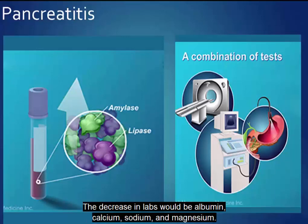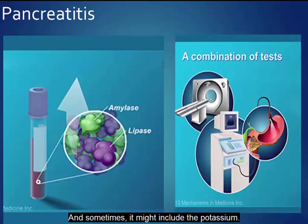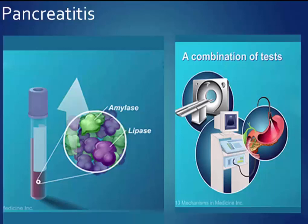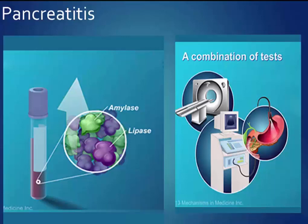Decreased labs would be albumin, calcium, sodium, and magnesium, and sometimes potassium. Potassium would be low due to dehydration, vomiting, and the binding of calcium in areas of fat necrosis.